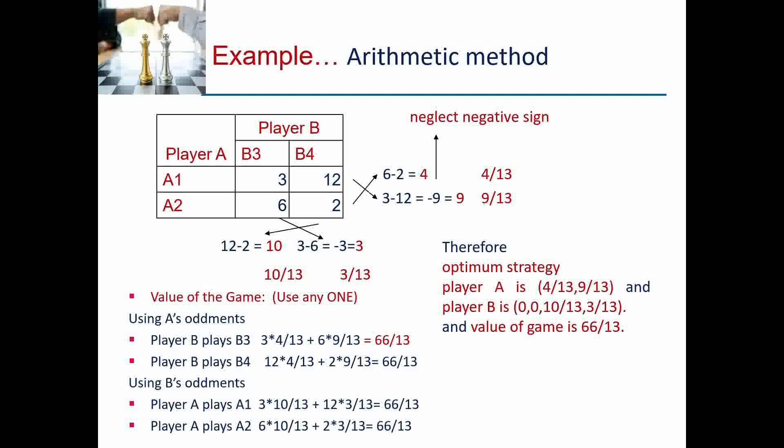To summarize the procedure: first check for a saddle point, then apply the dominance property to reduce the game as much as possible, then apply the graphical method to find the 2×2 matrix, and finally apply the arithmetic method to solve the problem and find optimum strategies for player A and B and the value of the game.